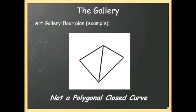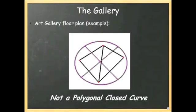For example, this shape contains multiple rooms. So this shape is not an example of a polygonal closed curve. If anything, it's two polygonal closed curves side by side.